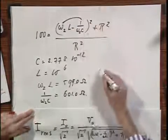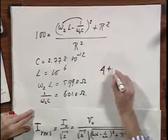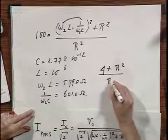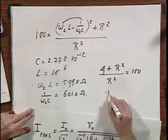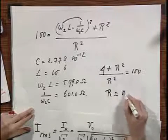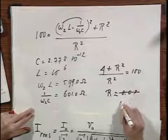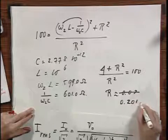So 2 squared is 4. So I get 4 plus R squared divided by R squared equals 100. And when I solved that equation, I found that R is approximately 0.201 ohms.